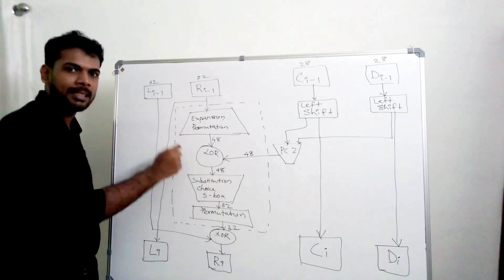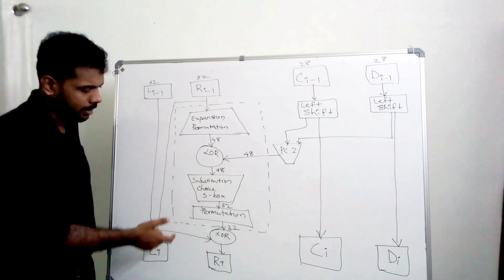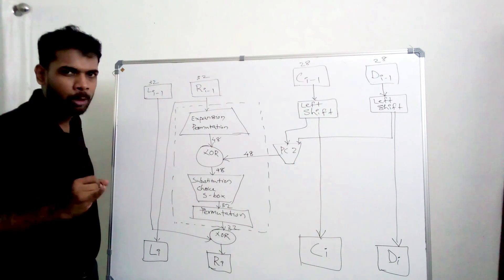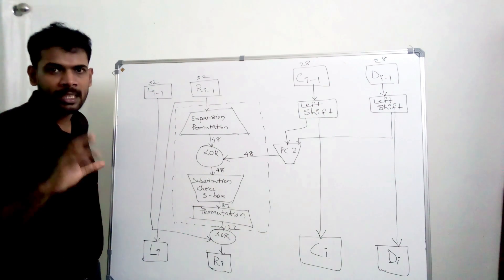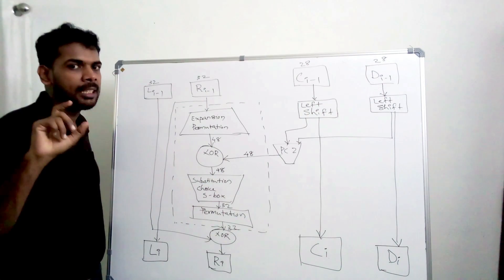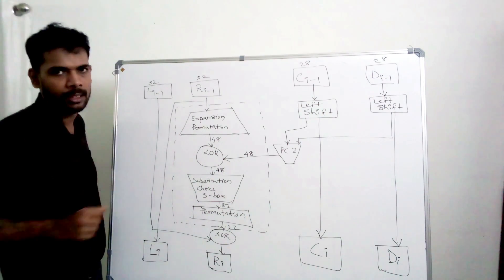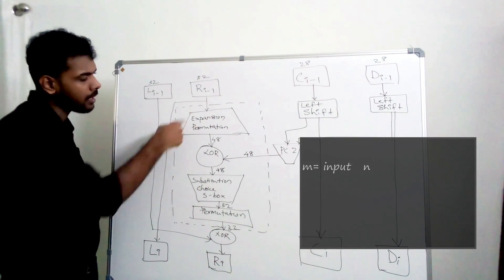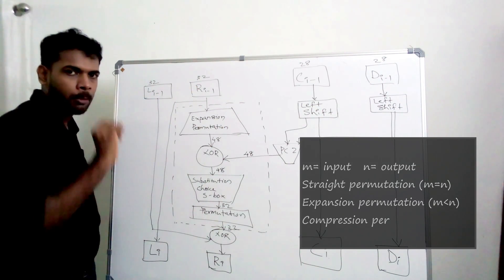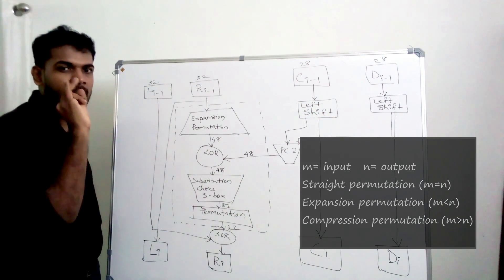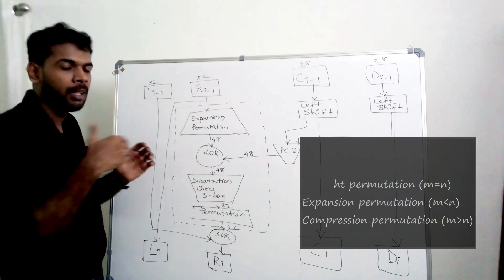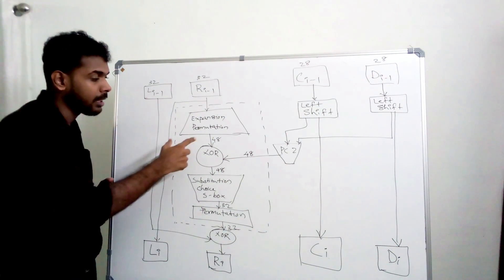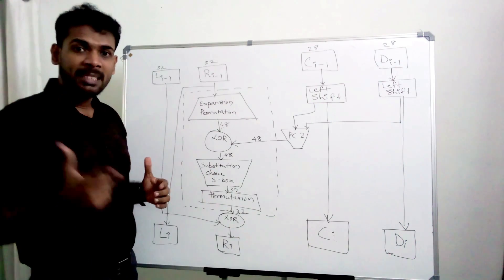The round function consists of: expansion permutation, key mixing (XOR), substitution choice (S-boxes), and straight permutation. The 32-bit right half undergoes expansion permutation to become 48 bits — adding 16 extra bits. This 48-bit output is then used in the next step.